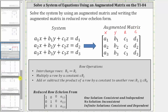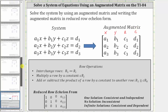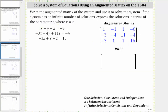Going back to our example, looking at the first equation: the coefficient of x is one, the coefficient of y is negative one, the coefficient of z is one, and the constant is negative eight. The first row of the augmented matrix is one, negative one, one, negative eight.